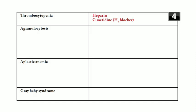Agranulocytosis: remember the three C's — clozapine, carbamazepine, and colchicine. Additional causes include antithyroid drugs propylthiouracil and methimazole, and dapsone. So: clozapine, carbamazepine, colchicine, propylthiouracil, methimazole, and dapsone can all cause agranulocytosis.